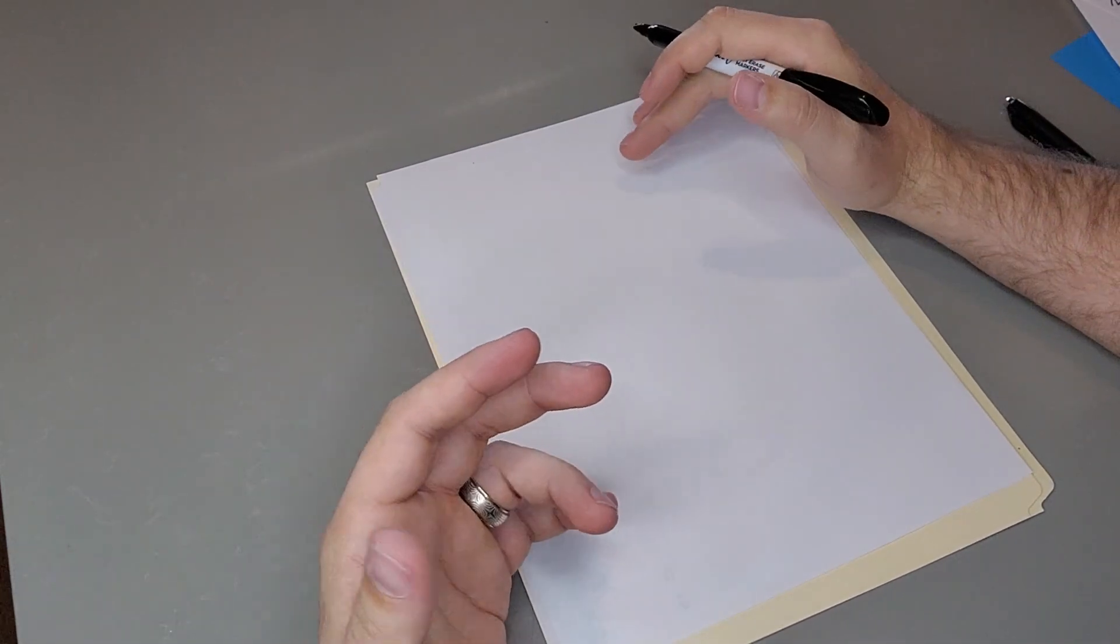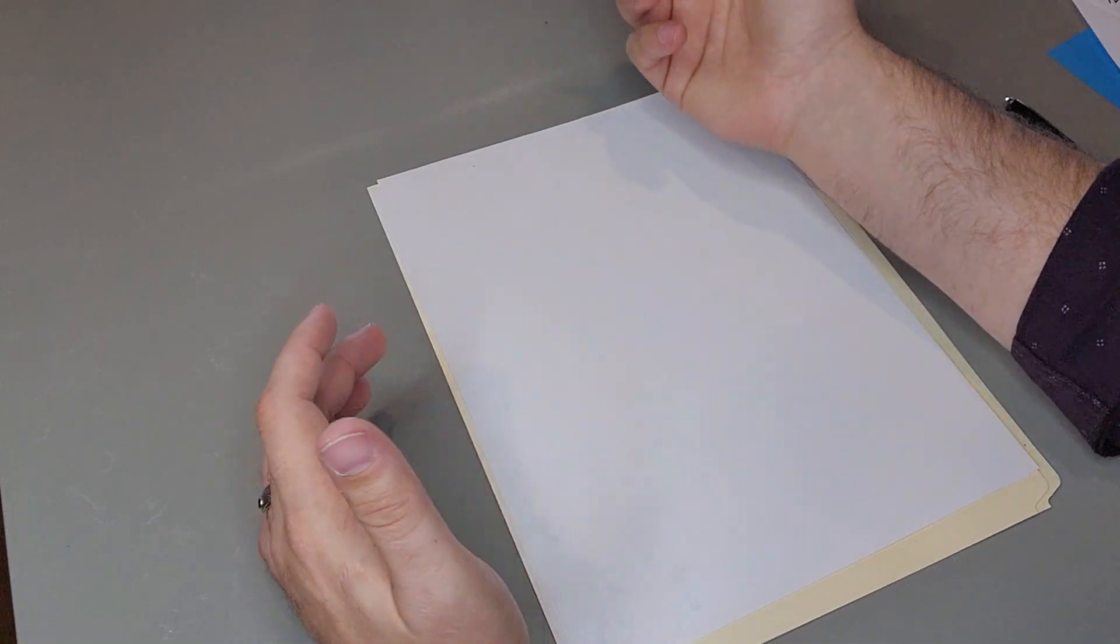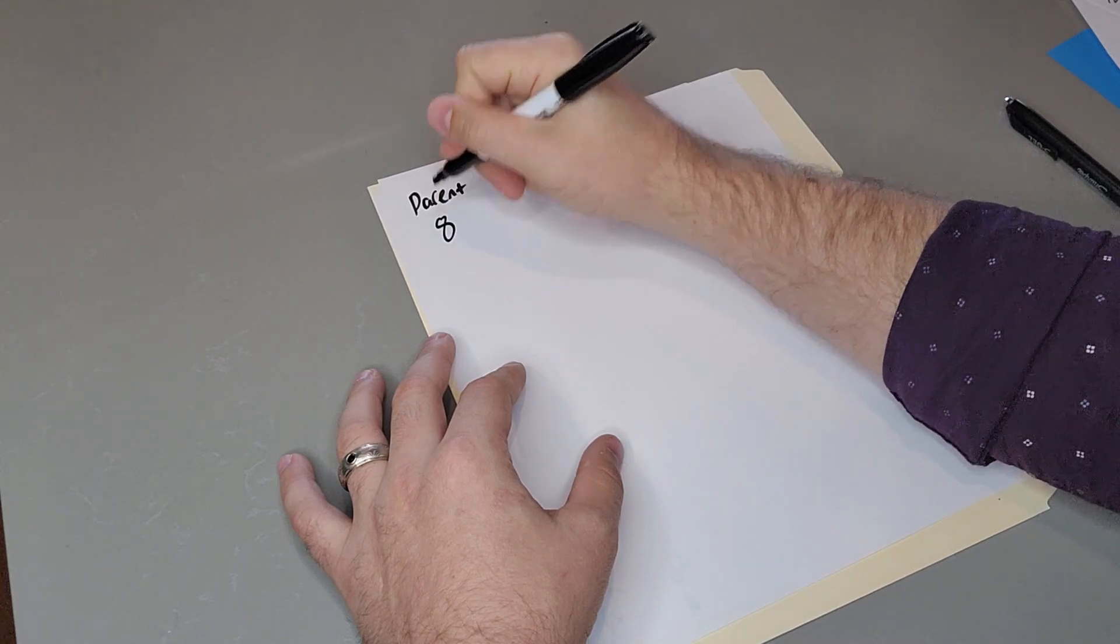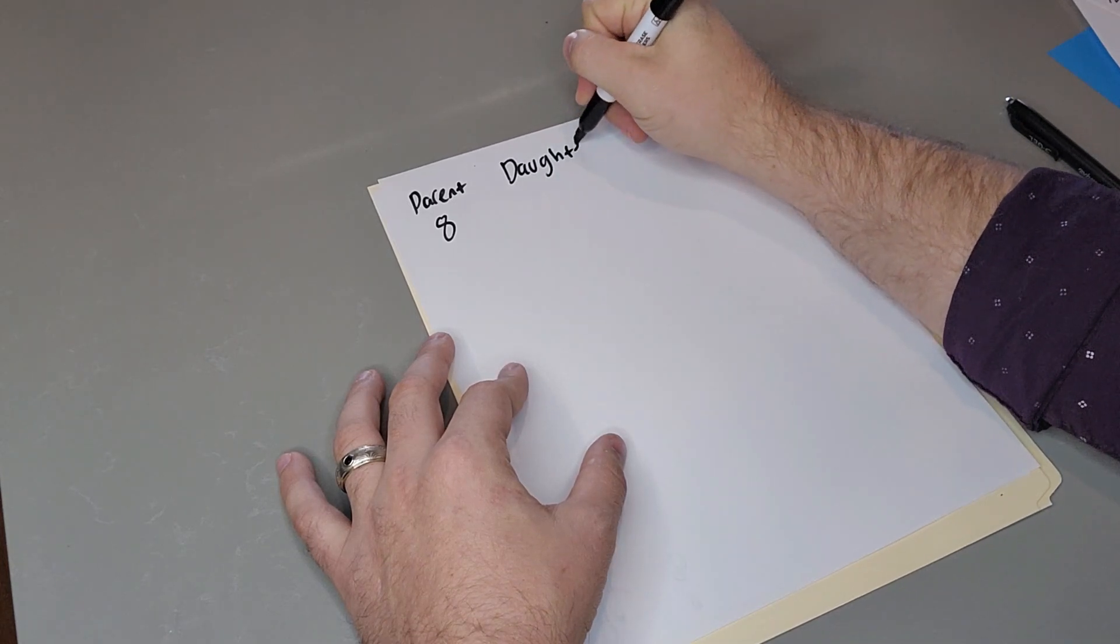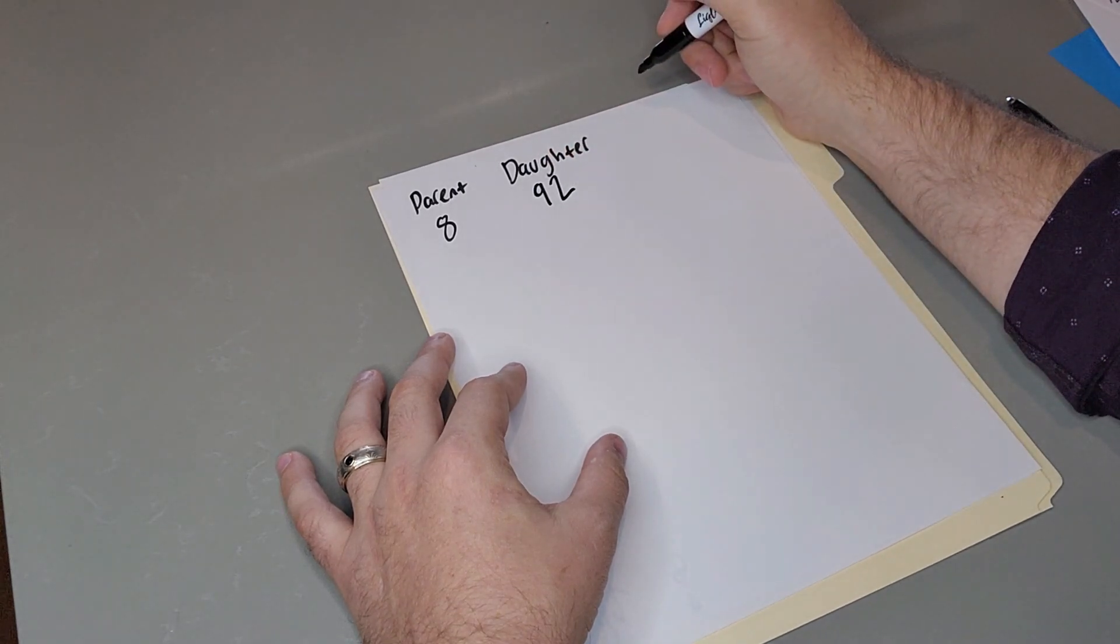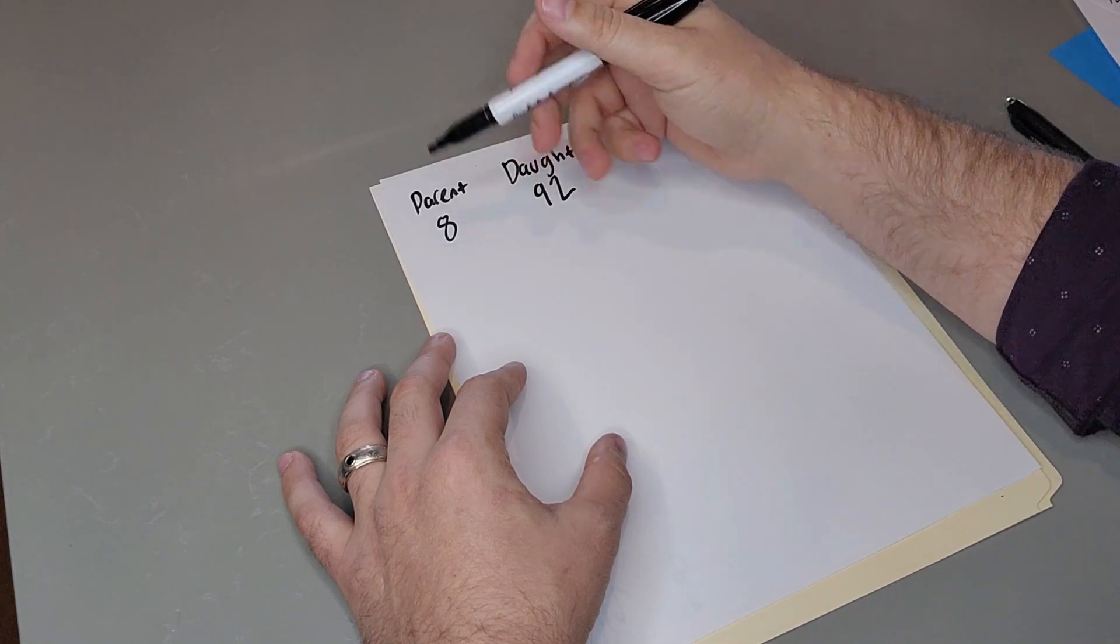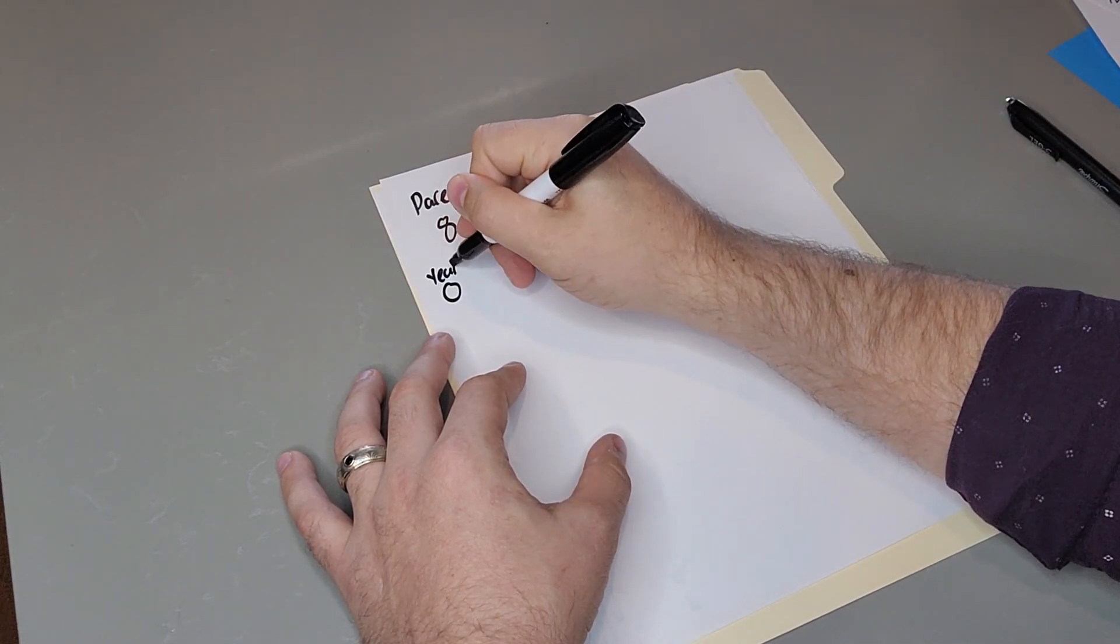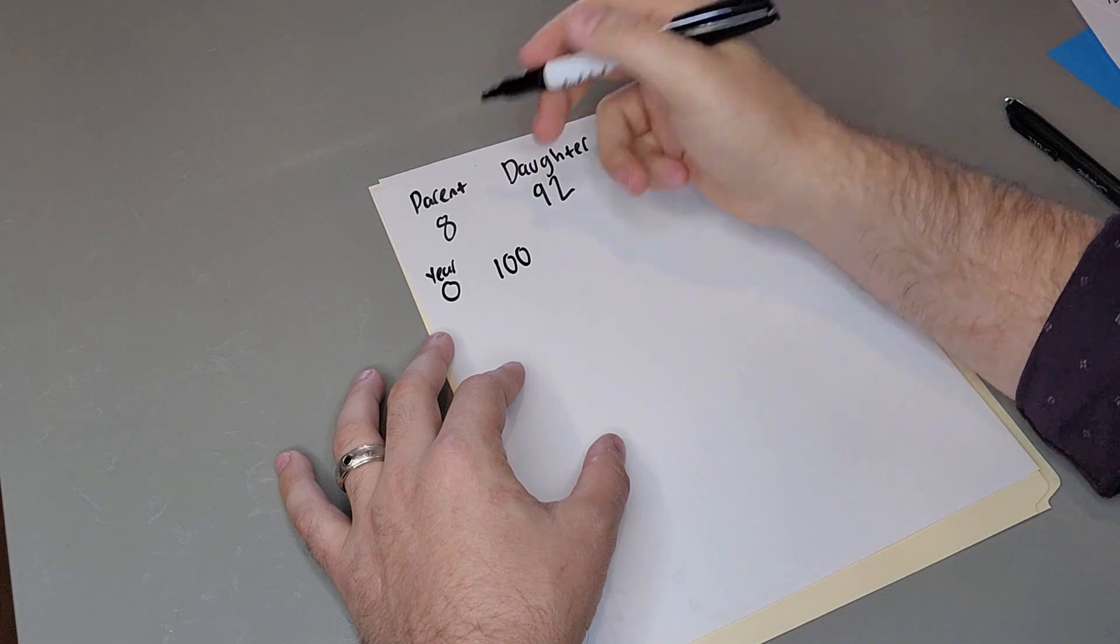Here's the math that I do ahead of time before I hand them the actual folders with the real fossils. Imagine we have a fossil sample that the parent isotope had a value of 8, and then the daughter isotope had a value of 92, just to keep our numbers a little nice right here. At this point, we have to ask ourselves, how much was there at the very beginning before anything started decaying? So at year zero, there was, if you add it all up, 100 total, and that would have been the parent.